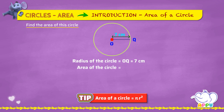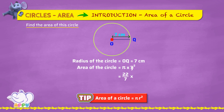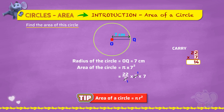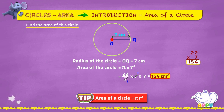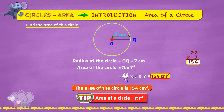Area of the circle equals pi times 7 squared, which equals 22/7 times 7 times 7. We get 154 square centimeters. So the area of the circle is 154 square centimeters.